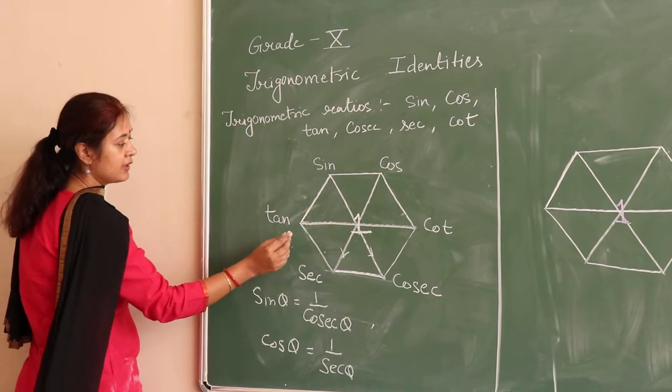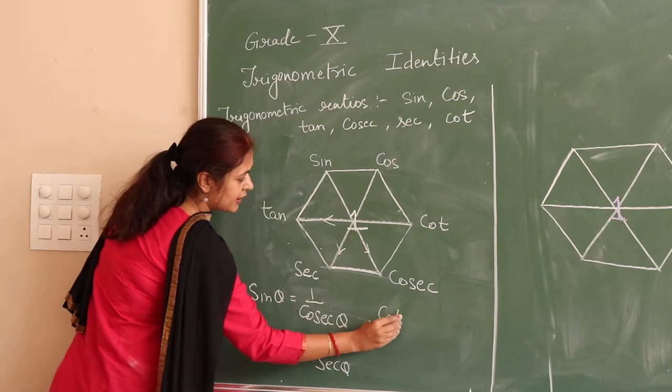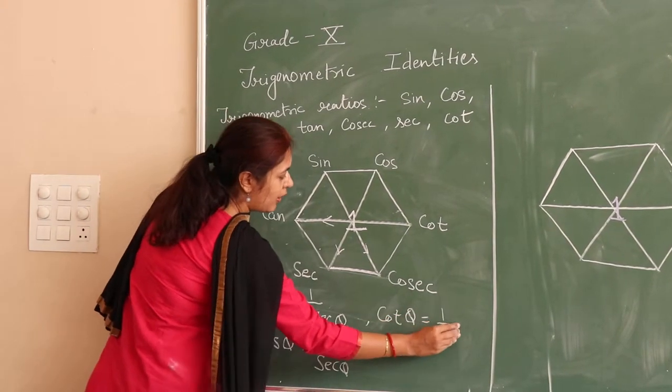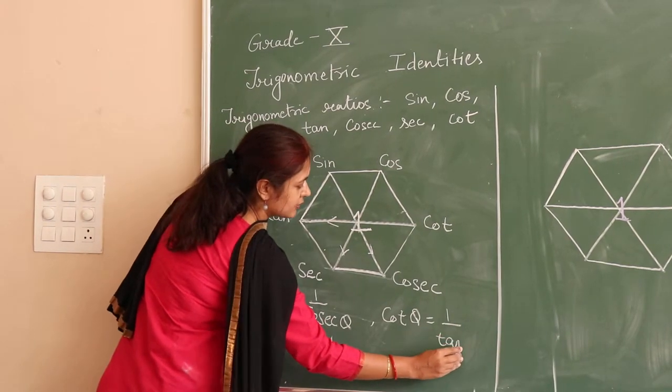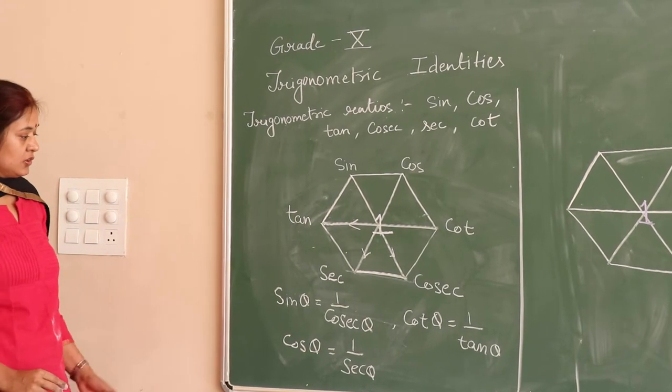And the third diagonal, that says cot theta is equal to 1 upon tan theta.